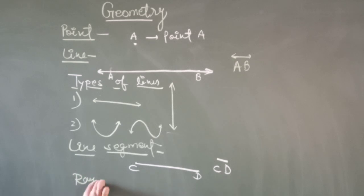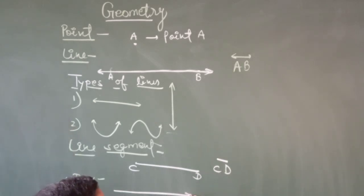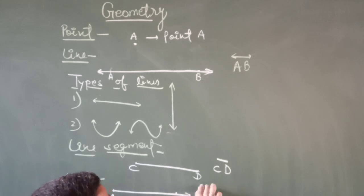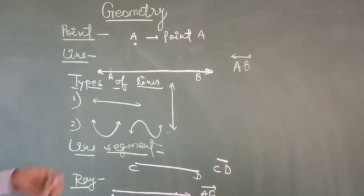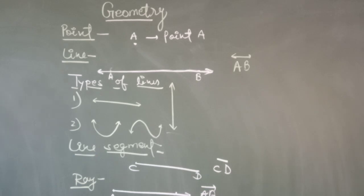The next topic is Ray. A ray is also a part of a line. It has a fixed starting point and extends without ending in one direction. A ray does not have a fixed length, so it cannot be measured. Ray PQ is written as PQ and read as ray PQ.